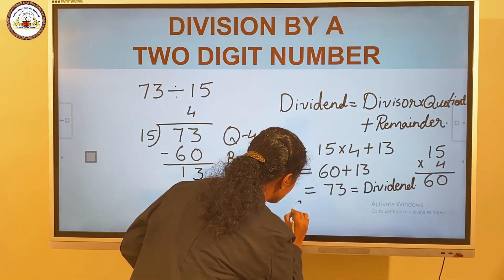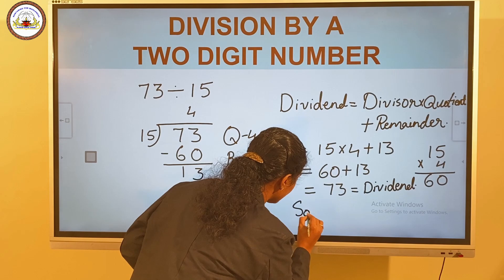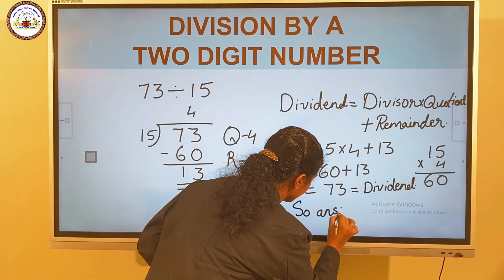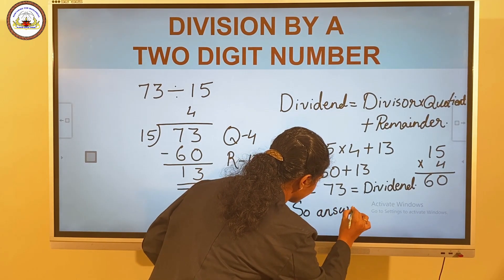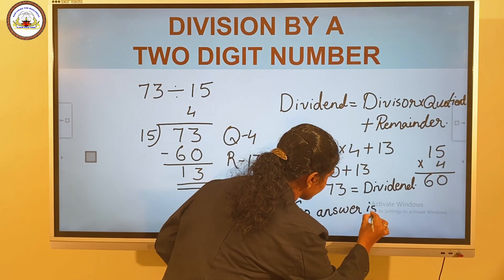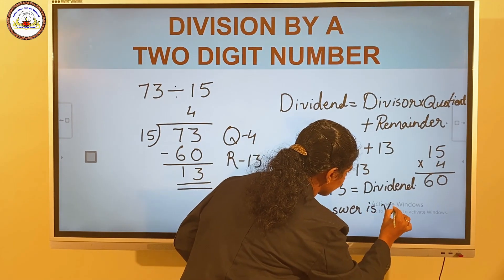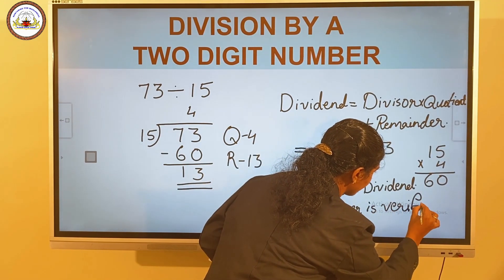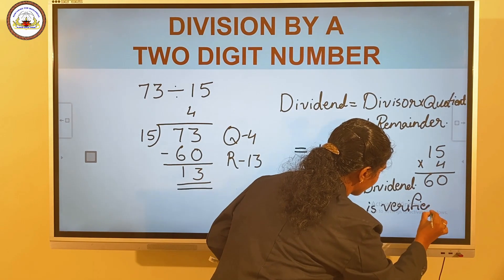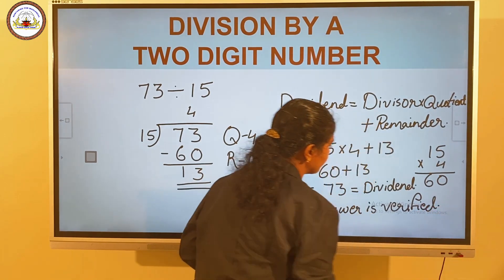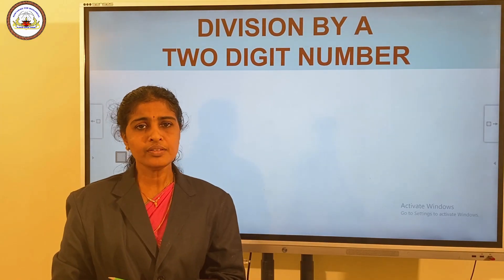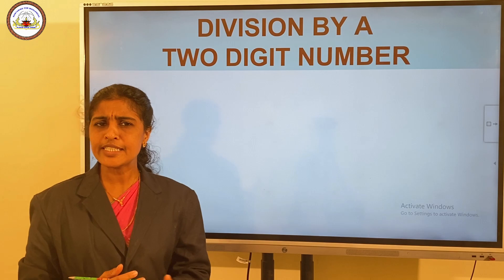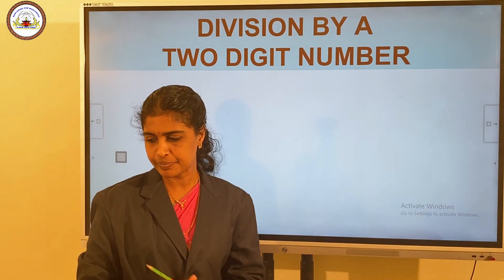So, the answer is verified. Now we have another problem — a three-digit number divided by a two-digit number.